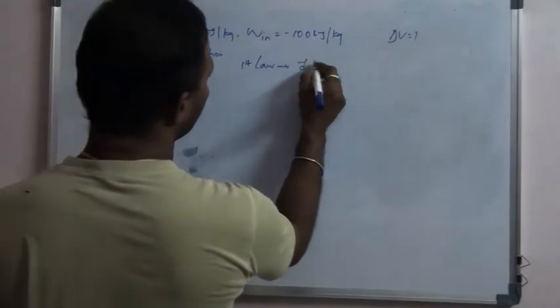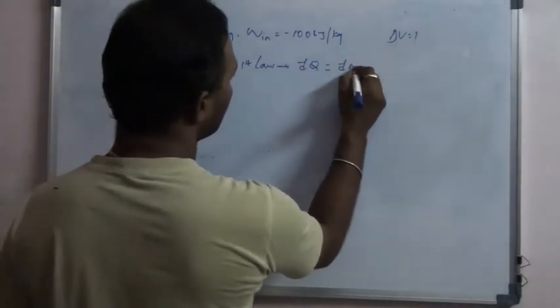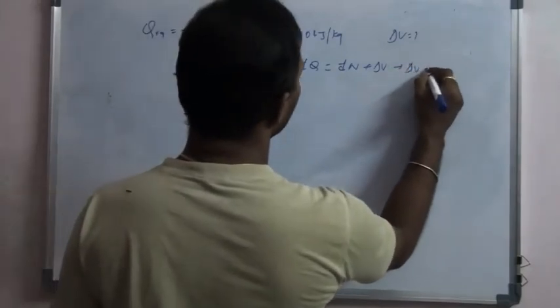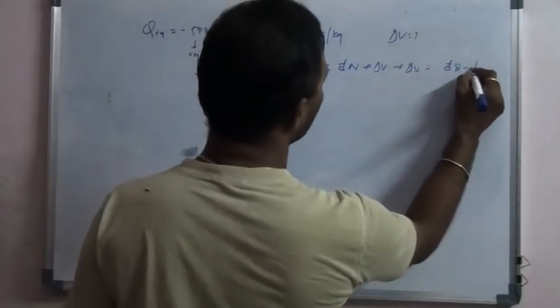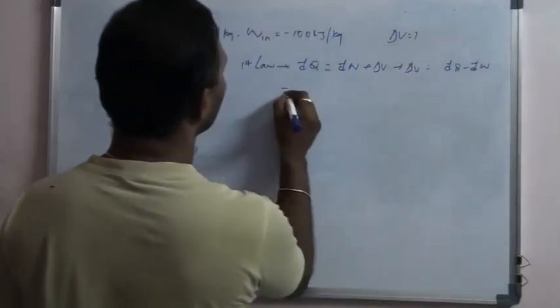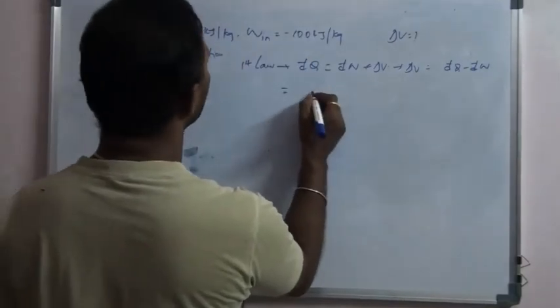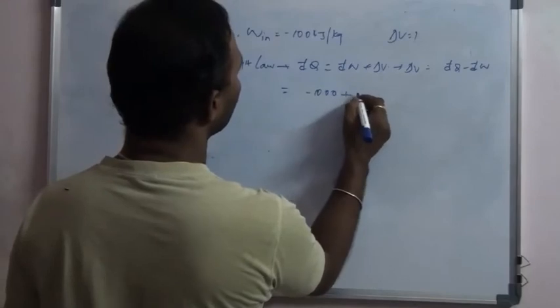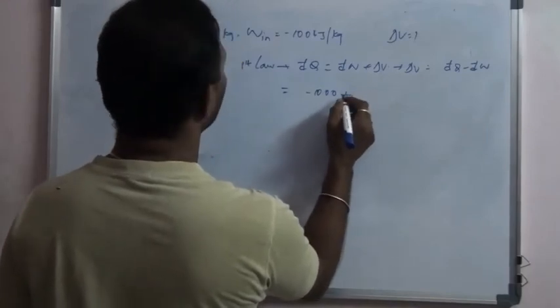As you know, dQ = dW + dU. From this, if you want to calculate dU: dU = dQ - dW. In this, what is dQ? Which is already given as minus 100. Minus of minus will be plus.